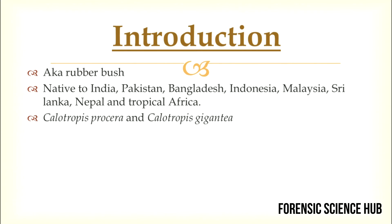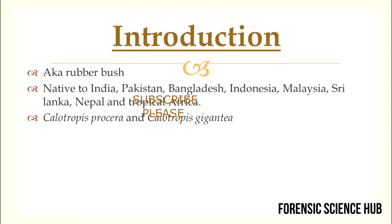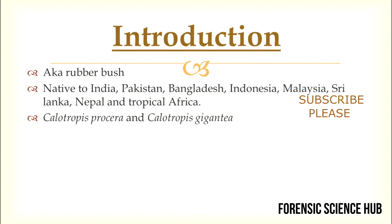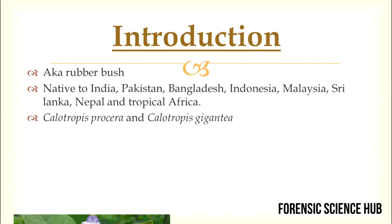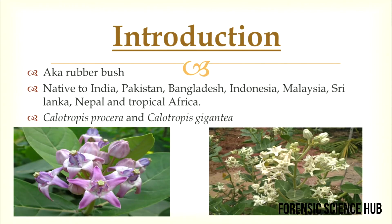There are two plant species. One is Calotropis procera and the other is Calotropis gigantea. The flower of Calotropis procera is white in color, whereas Calotropis gigantea has purple flowers. Here you can see the purple color flower — that plant species is Calotropis gigantea, whereas the white flowers belong to Calotropis procera.